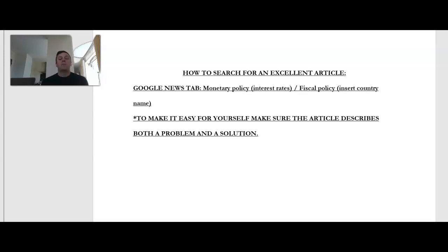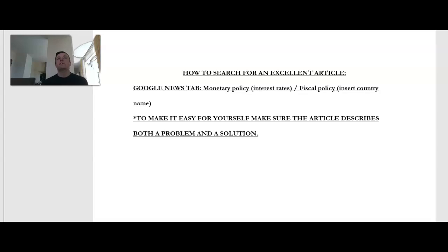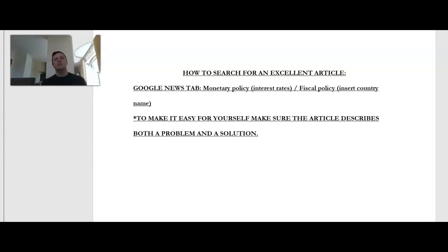Hi everyone, so today we're going to be talking about how to write the perfect macroeconomics IA. Students probably struggle with this one the most, and I think the reason is that the international IA is usually on something very specific like a tariff on a specific good. The microeconomics IA is also on something specific like a Pigovian tax or a measure to cure an externality. With the macroeconomics IA, you are taking into account so many different factors, and the policies themselves have very broad implications, so students struggle a lot with evaluating the policies and explaining them effectively.